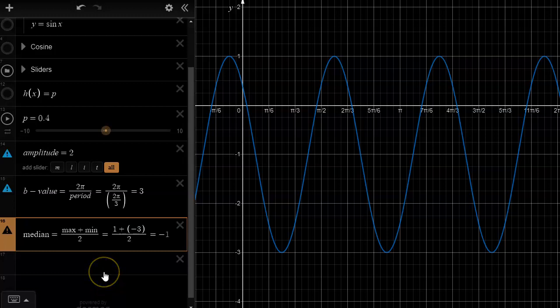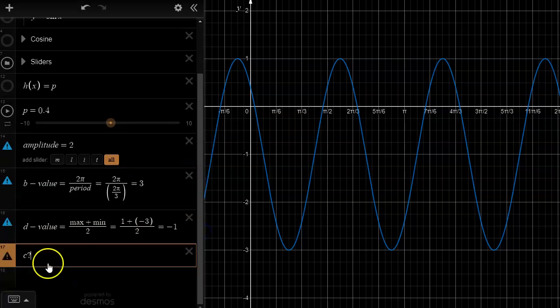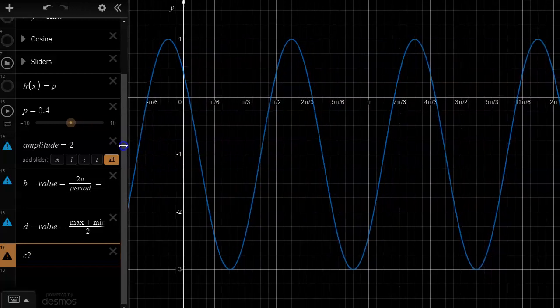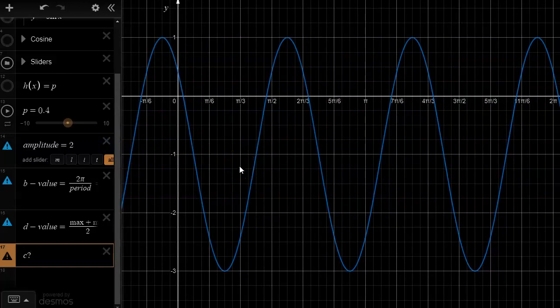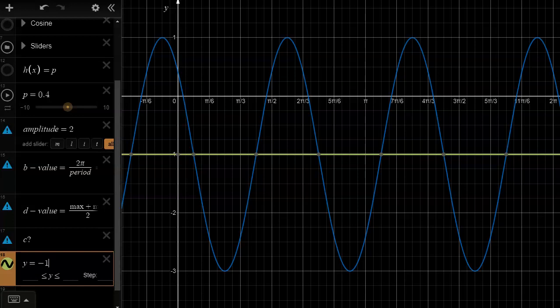Now we need to figure out the c value. The c value for a sine function depends on where that median is. The first thing I'm going to do when I'm given a graph is take a pen or marker and draw in the median. The median would be y is equal to negative 1.